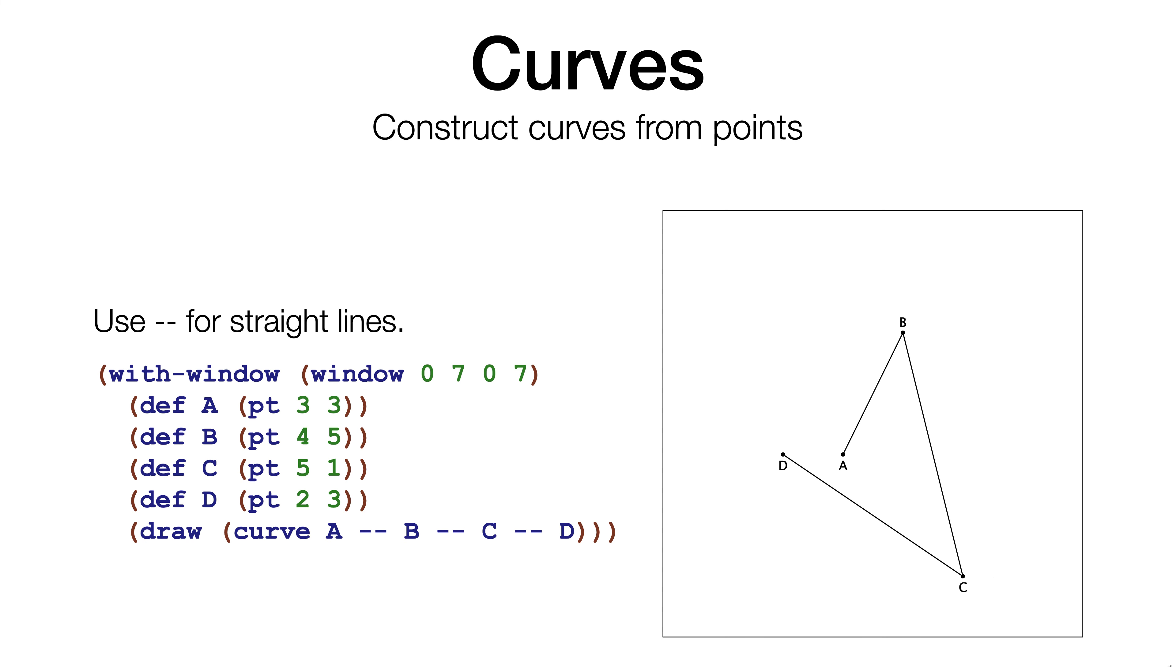The form curve constructs a curve from a given set of points. Between the points, you need to write how the points are connected. In this example, dash-dash is used to connect points with straight line segments.